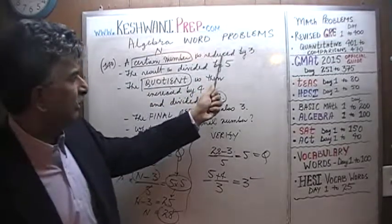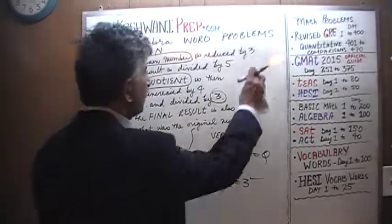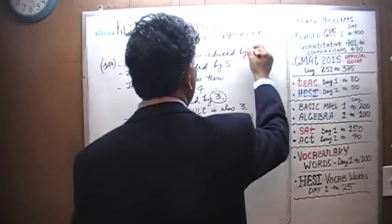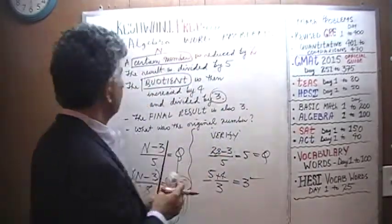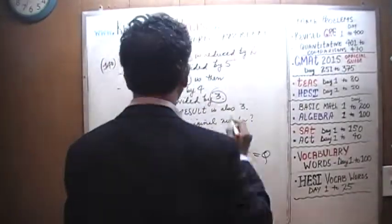It says a certain number is reduced by 3 in the previous problem. In this new problem, we're going to reduce it by 2. The result is then increased by 5. That's the same as before.